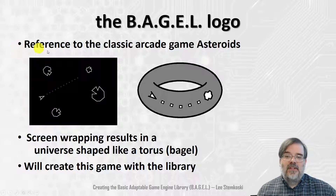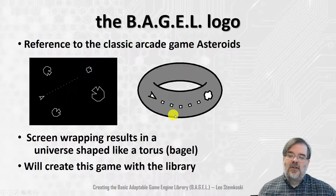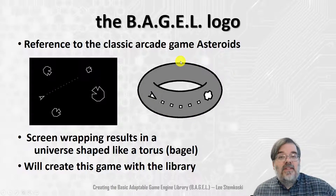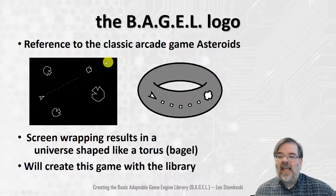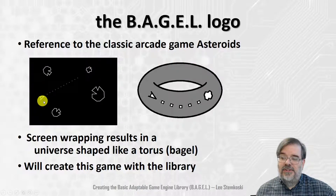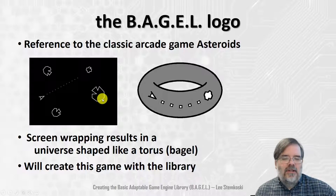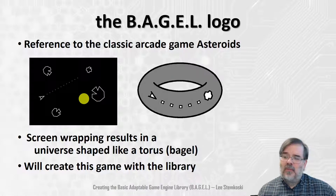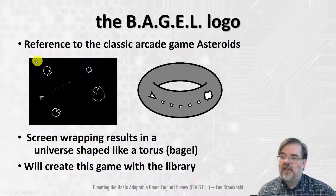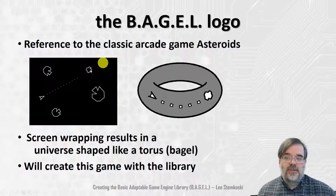You might have noticed the logo for this project is also shaped like a bagel. This is a reference to the classic arcade game Asteroids. In this game you control a spaceship represented by a triangle, and you try to shoot jagged polygon shapes which are the asteroids. There's something interesting about the game world: if you take the spaceship and move it past the right edge of the screen, you appear on the left edge. If you move it past the top edge, you reappear along the bottom edge, and vice versa.